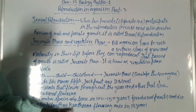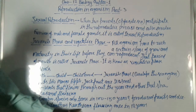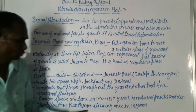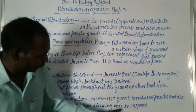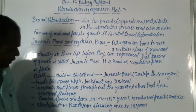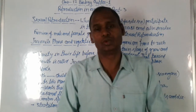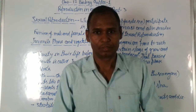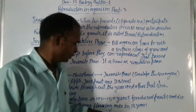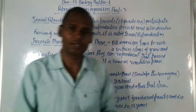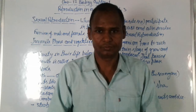Strobilanthes kunthiana is a plant that flowers once in 12 years. It flowers on the 12th year, and then after another 12 years it will flower again. So this plant has a cycle of flowering once every 12 years.